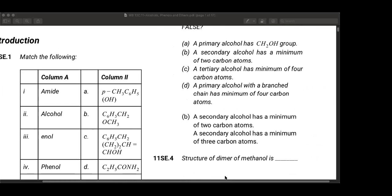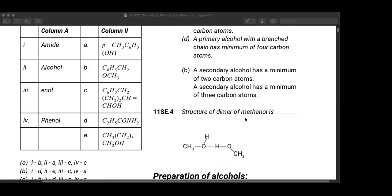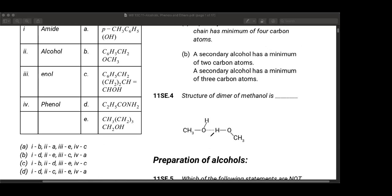Next: the structure of a dimer of methanol. A dimer has two methanol molecules. Methanol is CH₃OH. Two molecules bond only through hydrogen bonding. Oxygen is electronegative so has a partial negative charge, and hydrogen has a partial positive charge, which is why hydrogen bonding is possible between both.